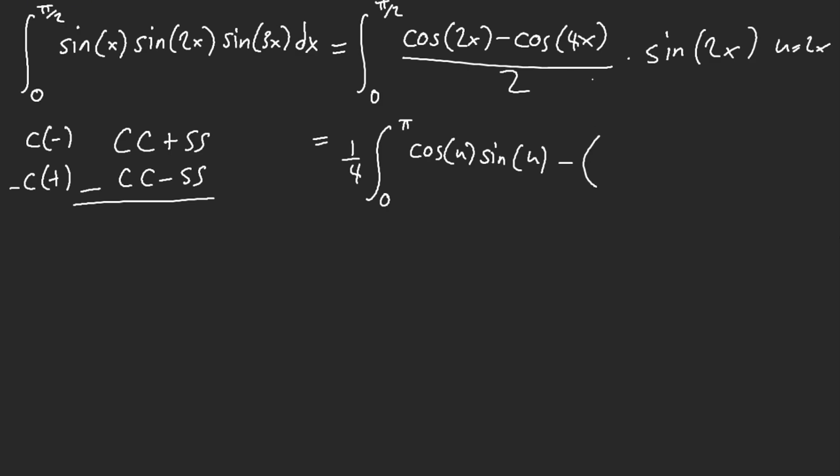and then here we just have 2 cosine squared minus 1 as well. So now if you do u substitution here, this is 1/4th, let w equal sine of u, right, and cosine, you get w squared over 2 from 0 to, oh shoot.